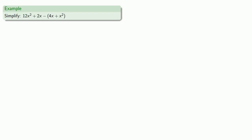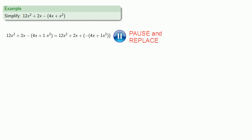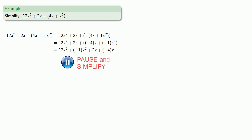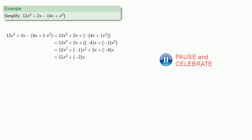Consider another example. There's no written coefficient of x squared, but that's okay — we have an implied coefficient of 1, and it's convenient to write that down. We're subtracting 4x plus 1x squared, which is the same as adding the additive inverse of 4x plus 1x squared. The additive inverse of a sum is the sum of the additive inverses. Now it's just an addition, so we can rearrange terms any way we want, combine like terms, and we have our final answer: 11x squared plus the additive inverse of 2x.